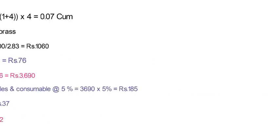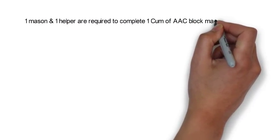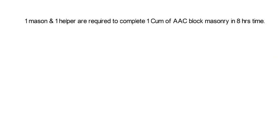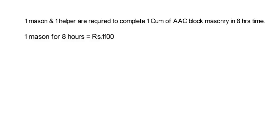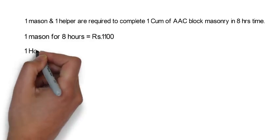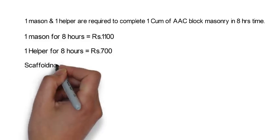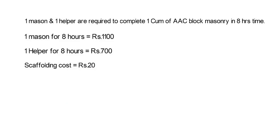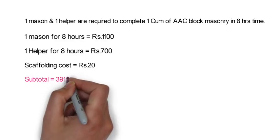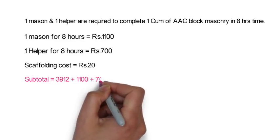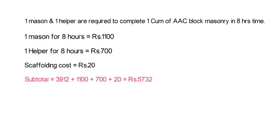Now coming to the labor part. One mason and one helper are required to complete 1 cubic meter of AAC block masonry in 8 hours. One mason for 8 hours is 1,100 rupees, one helper for 8 hours is 700 rupees, and scaffolding cost is 20 rupees per square meter. The subtotal of material plus labor is 3,912 plus 1,100 plus 700 plus 20 is equal to 5,732 rupees.